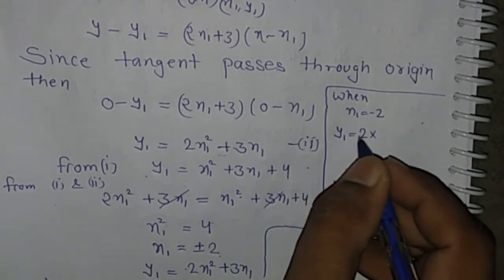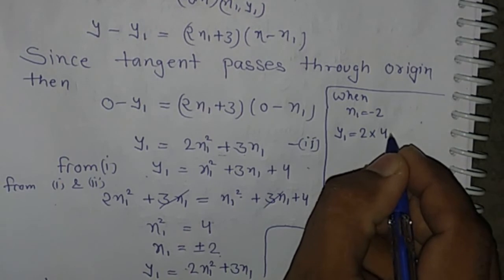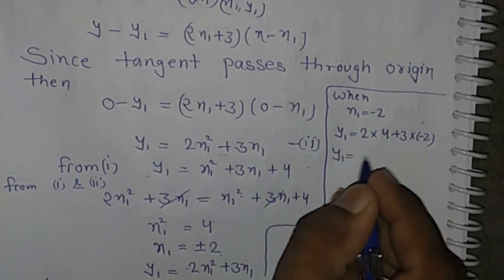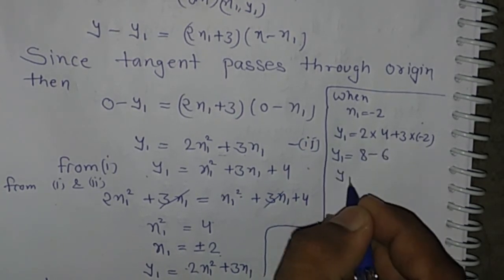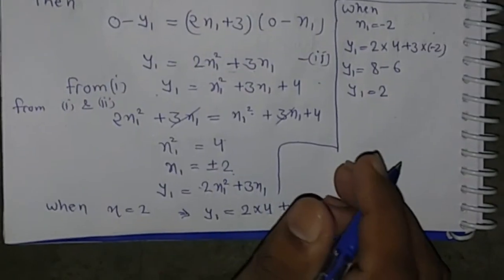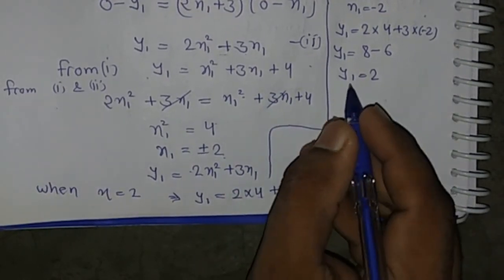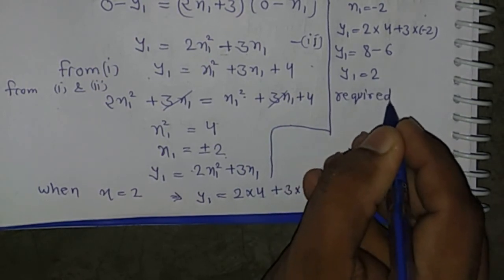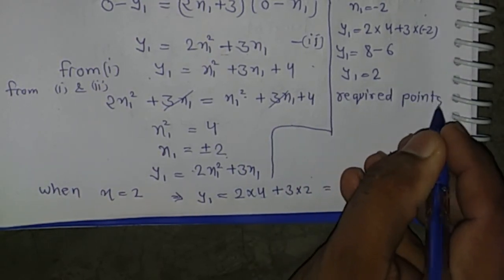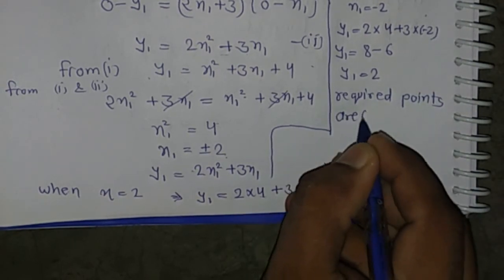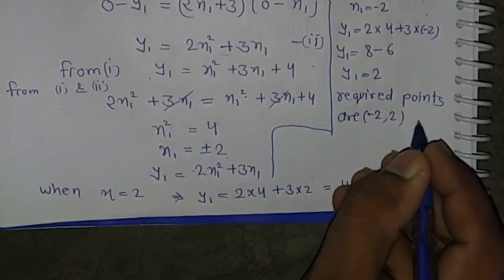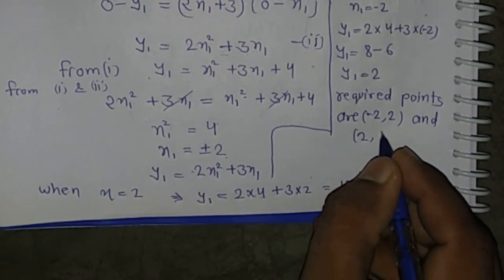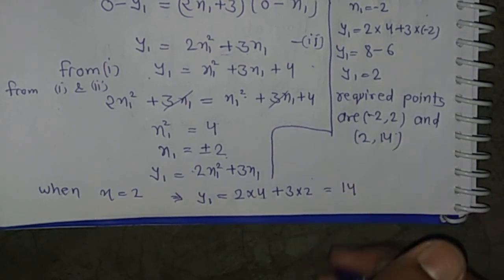When x₁ = −2, y₁ = 2(−2)² + 3(−2) = 8 − 6 = 2. Therefore, the required points are (−2, 2) and (2, 14). This is the answer.